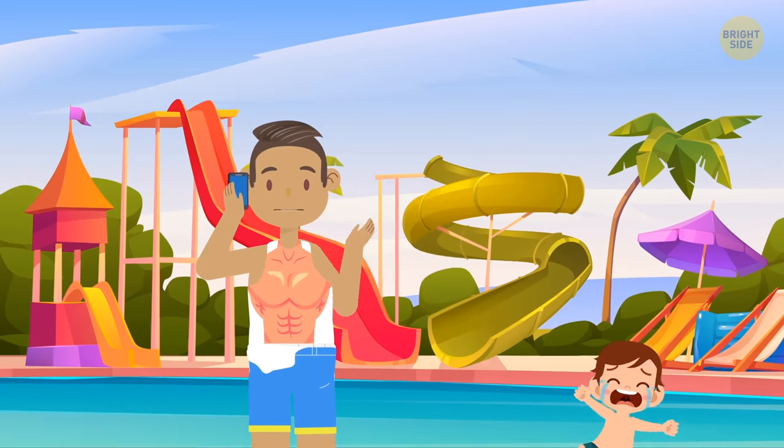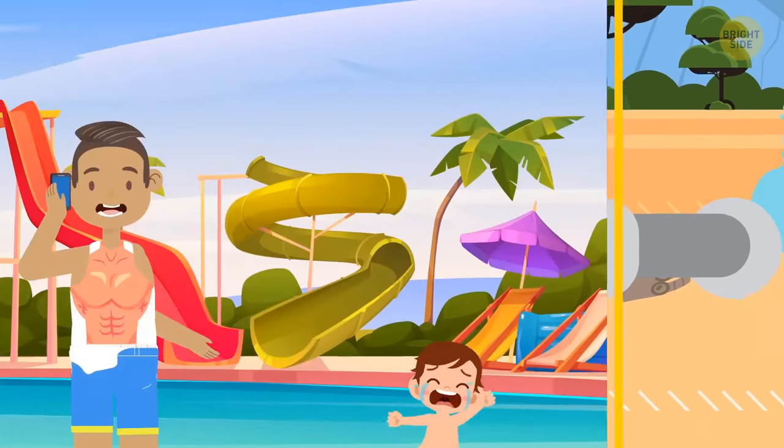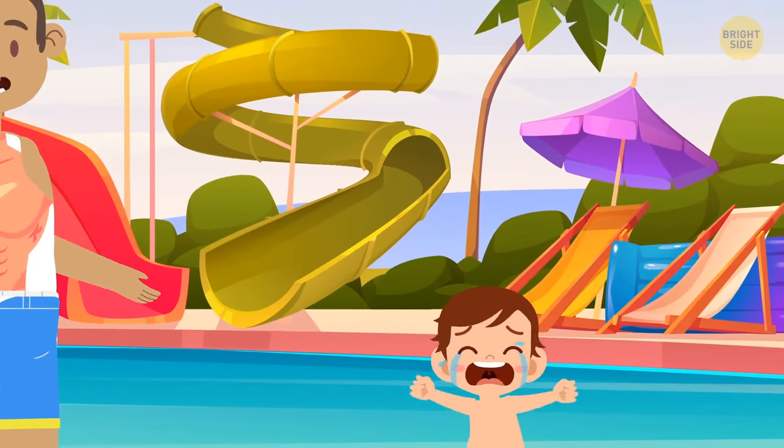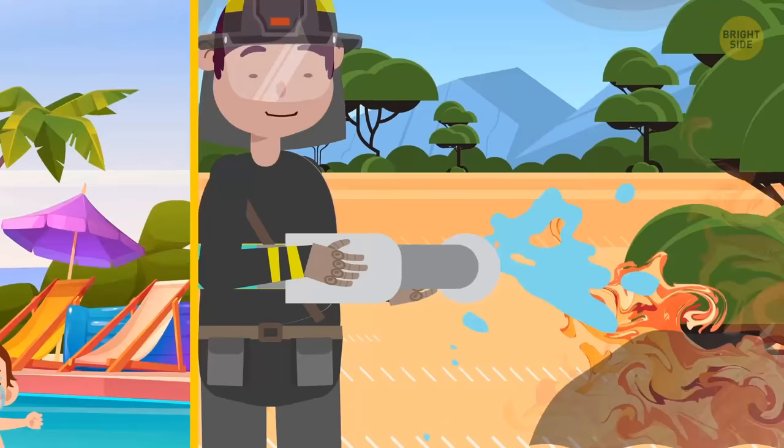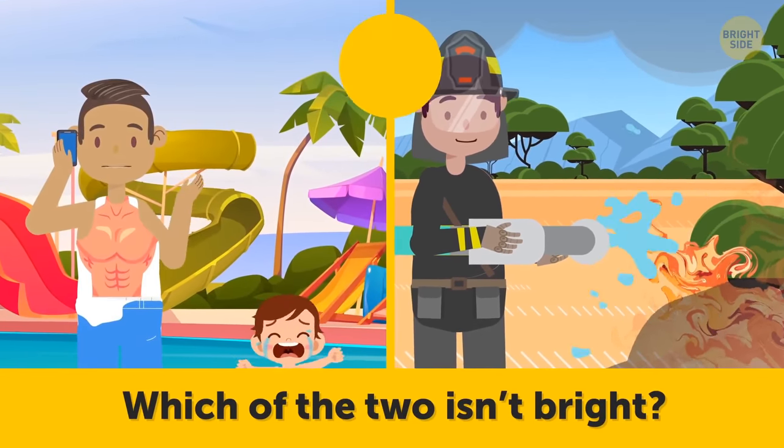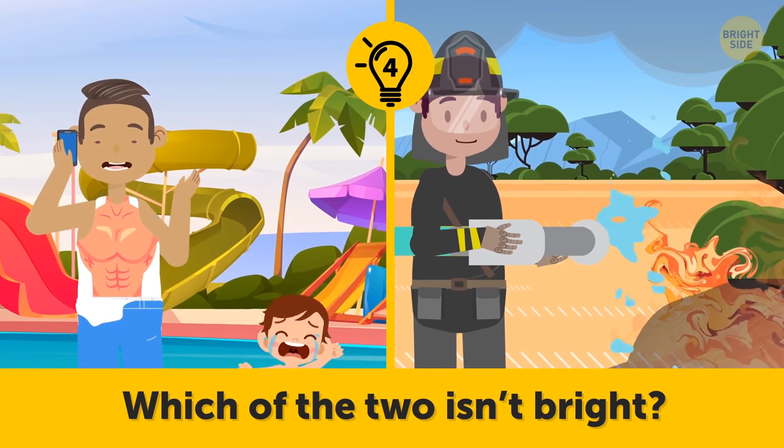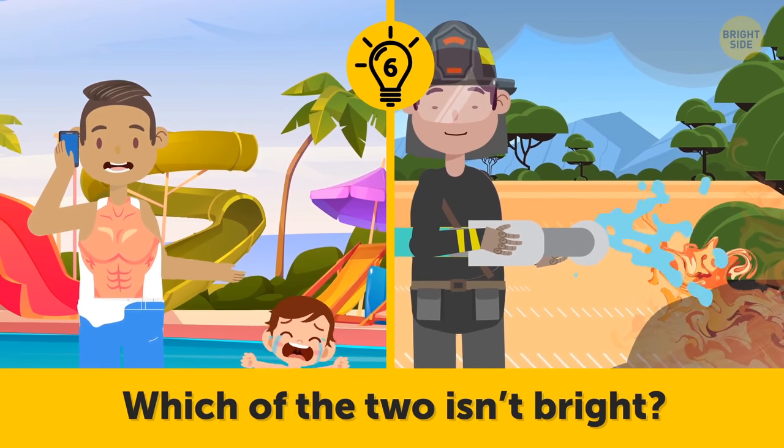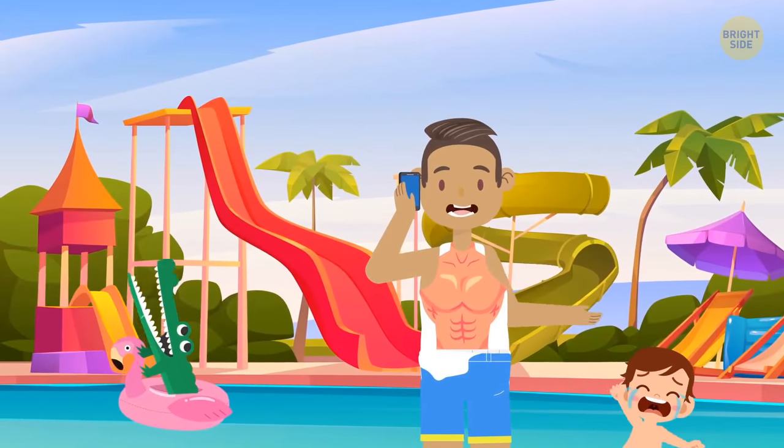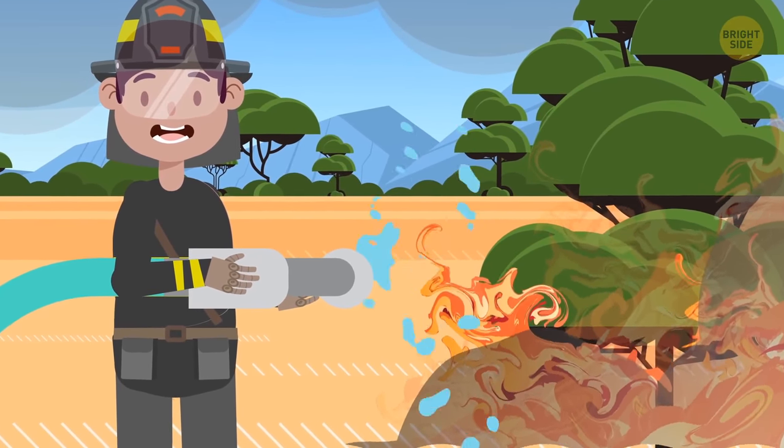Jason went to the water park with his son. Jake is a firefighter and was called to put out a fire. Now, Jason is on the phone while a boy behind him struggles to stay on the surface of the pool. Jake is putting out a fire on a tree. Which of the two isn't bright? Jason. He's on the phone and can't hear the boy behind him. Jake is putting out the fire on the tree to prevent it from spreading to the forest.